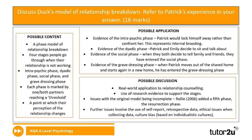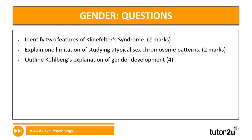Moving on to the gender section. There are three short questions and a 16-marker. The short questions are: identify two features of Klinefelter syndrome for two marks; explain a limitation of studying atypical sex chromosome patterns for two marks; and outline Kohlberg's explanation of gender development for four marks — eight marks in total, roughly 10 minutes. Pause the video and have a go at these three questions.